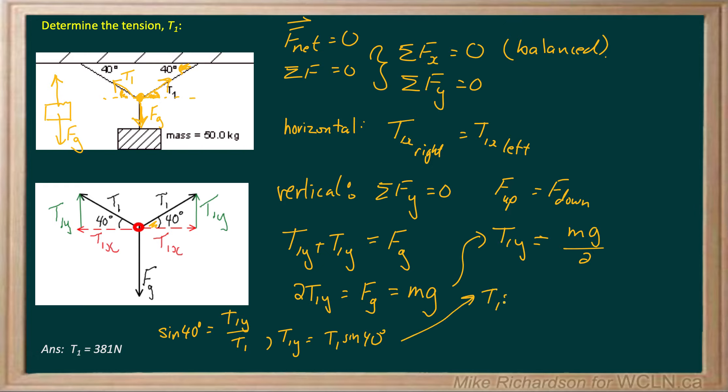Now let's take that and plug it in over here. And I get T1 sine 40 equals MG over two. And then I can finish my question. T1 is whatever MG over two is, all divided by sine 40. Now my mass is 50 kilograms. 50 times 9.8 is 490 divided by two. And then whatever that is divided by sine theta. And I end up getting 381 newtons.